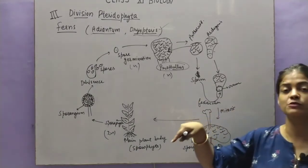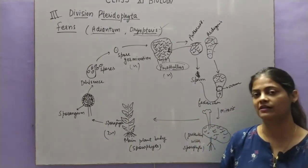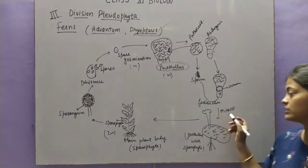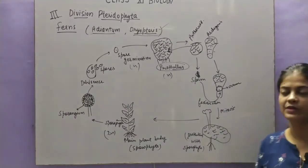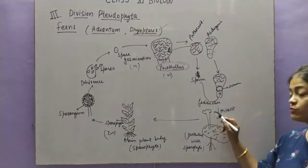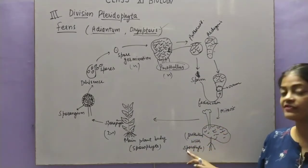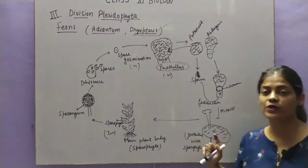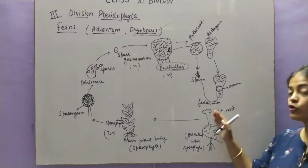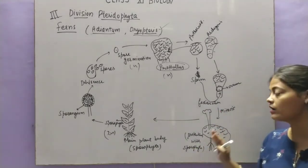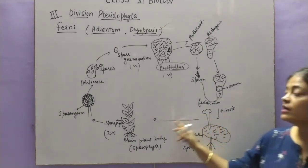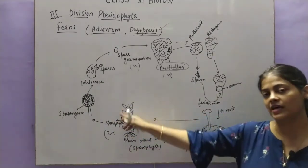Now the zygote — because the main plant body here is the sporophyte, which is a diploid structure — the zygote does not just do mitosis as in bryophytes where the main plant body was the gametophyte. Instead, the zygote undergoes development and forms the sporophyte. This stage is when the prothallus with the sporophyte is present — similar to what we see in bryophytes. Slowly the prothallus degenerates and only the sporophyte, which forms the plant body, remains.